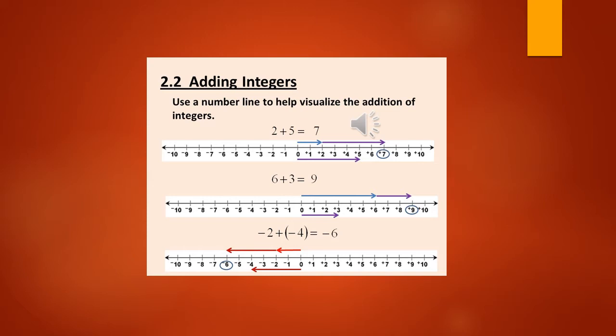Now, minus 2 plus minus 4 equals minus 6. First from 0 we go to minus 2, then from minus 2 we move 4 more places to the left, reaching minus 6. The plus-minus sign becomes minus, so minus 2 minus 4 equals minus 6. When the signs of both integers are the same, we add the integers. Here 2 plus 4 is 6, and we put the minus sign because the larger integer, minus 4, has a minus sign.